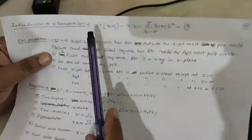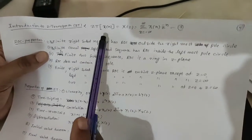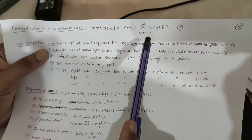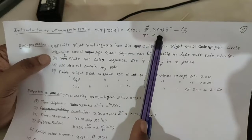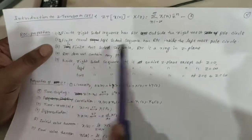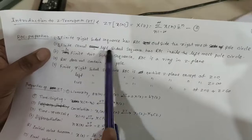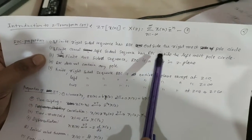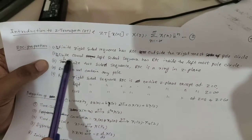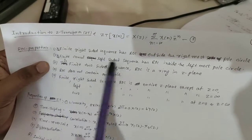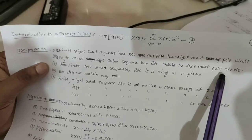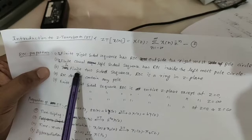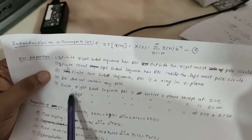Z-transform is applied for a discrete time signal. Z-transform of x of n is X of z, equal to summation from n equal to minus infinity to plus infinity of x of n z raised to minus n. ROC properties: a finite right-sided sequence has ROC outside the rightmost pole circle. An infinite causal left-sided sequence has ROC inside the leftmost pole circle. An infinite two-sided sequence ROC is a ring in the z-plane.